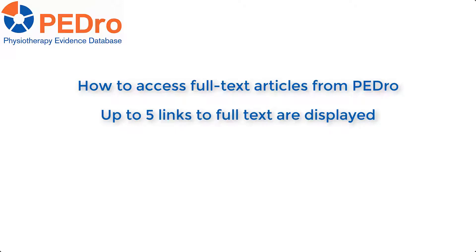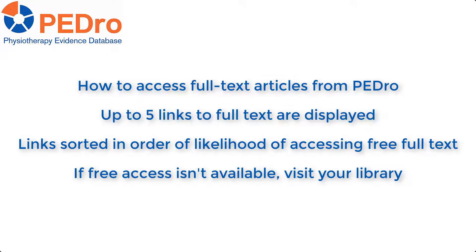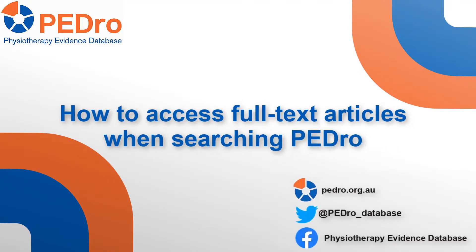We have just demonstrated how to access full-text articles from PEDro. Up to five links to full-text are displayed for each article indexed in PEDro. The links are listed in order of likelihood for accessing free full-text, with links at the top being more likely to connect to free full-text. Access to full-text is dependent on the publishing policies of journals, so free access may not always be available. When access is not free, we suggest you visit your organisation's library. We hope you have found this tutorial useful. Thank you.